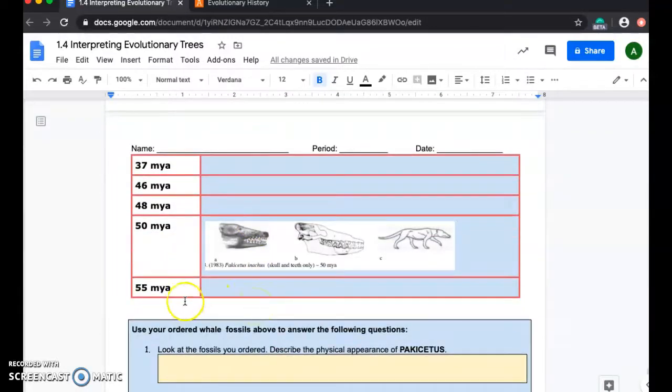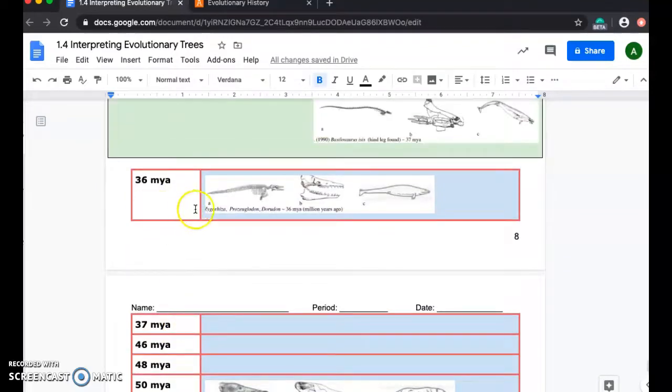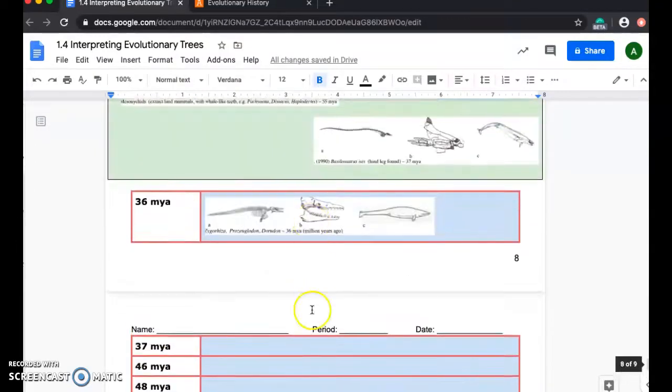So here are our fossil layers in red. And remember, the oldest layers go at the bottom, so we have 55 million years ago. And then the most recent or the newest layer will go at the top, so we have 36 million years ago. Now, two of these fossils have already been entered for you.